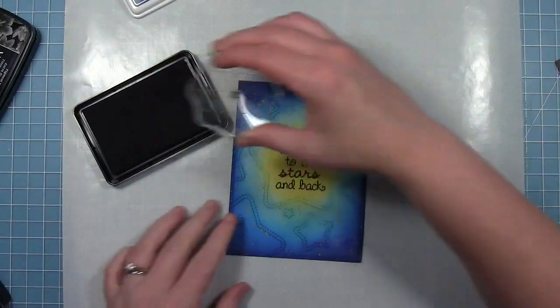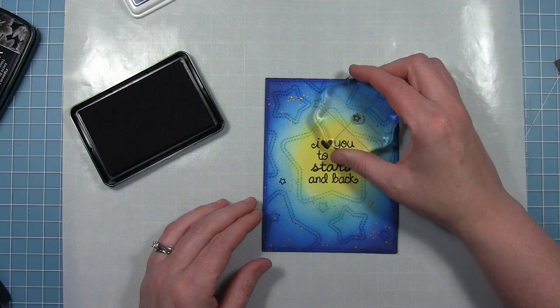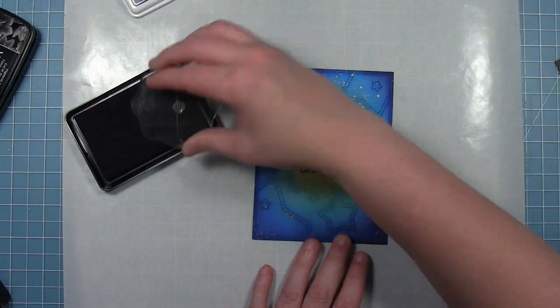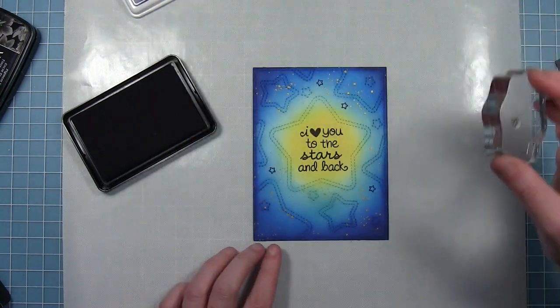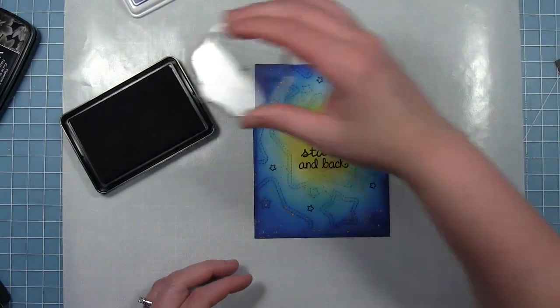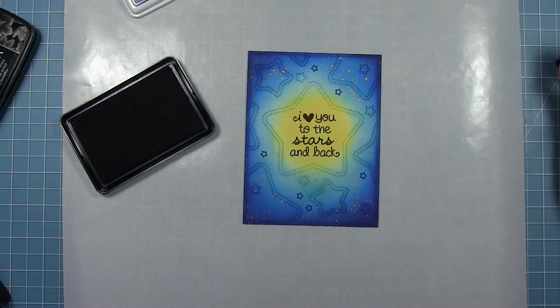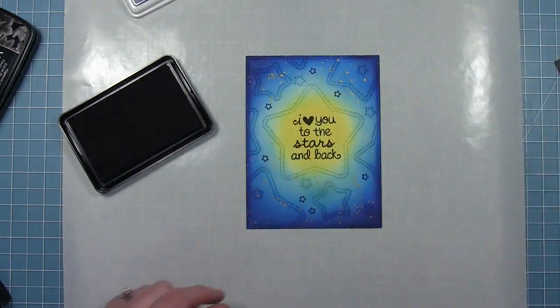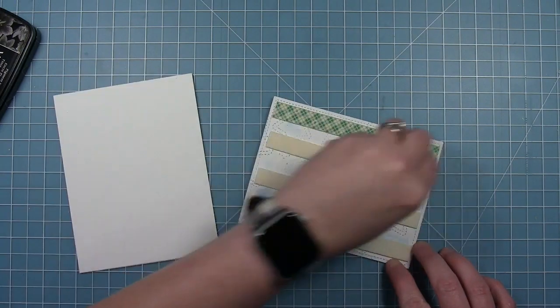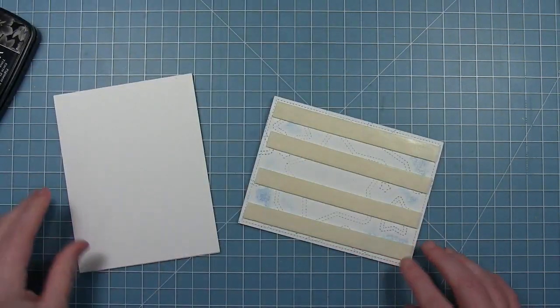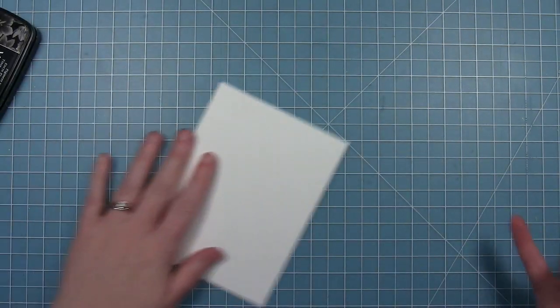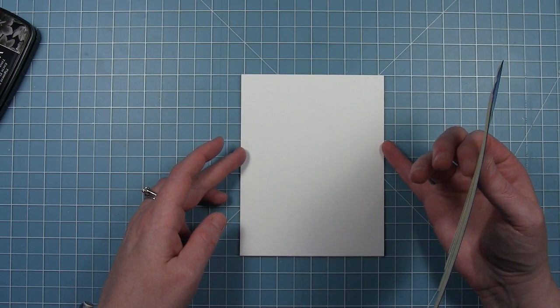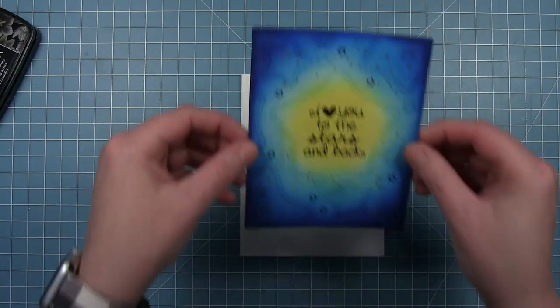I also am adding some darker stars. This is stamped with a tiny outline star that's also in the lucky star stamp set. And I'm using Blue Jay ink just to stamp a few of those around. It gives even more depth to the background I think by having these darker stars filled in in there. And now I'm going to use some foam tape and put this on my card base. So it's popped up a little bit off the card base and I'm going to have that nice really thin white border around it.